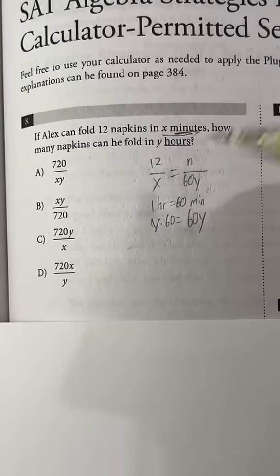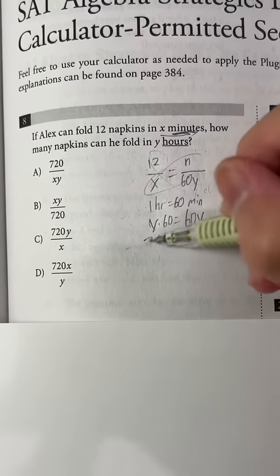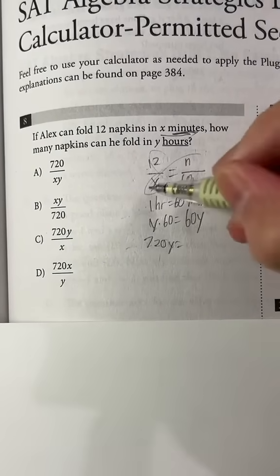So now we can solve for n. First, let's cross multiply, and that gives us 12 times 60y, which is 720y, equals x times n, which is xn.